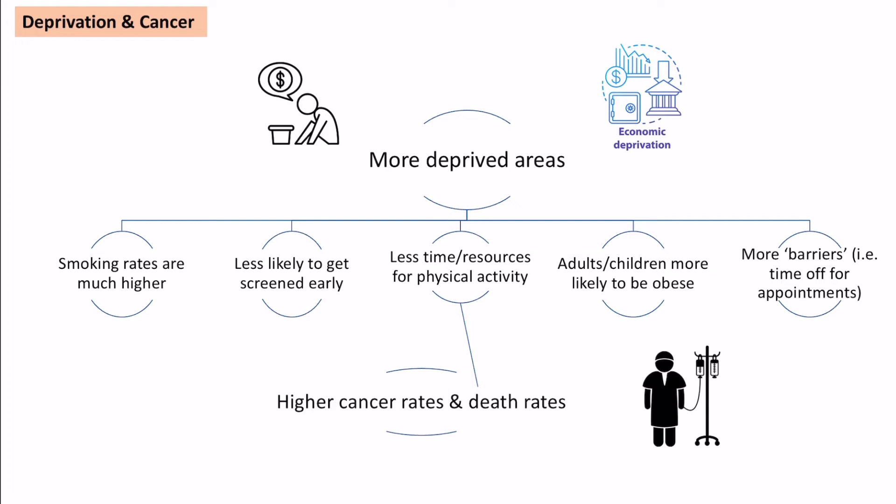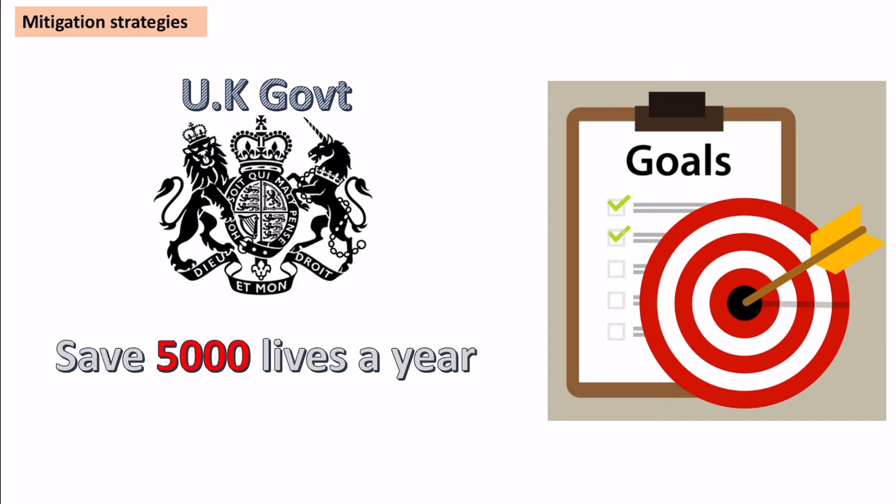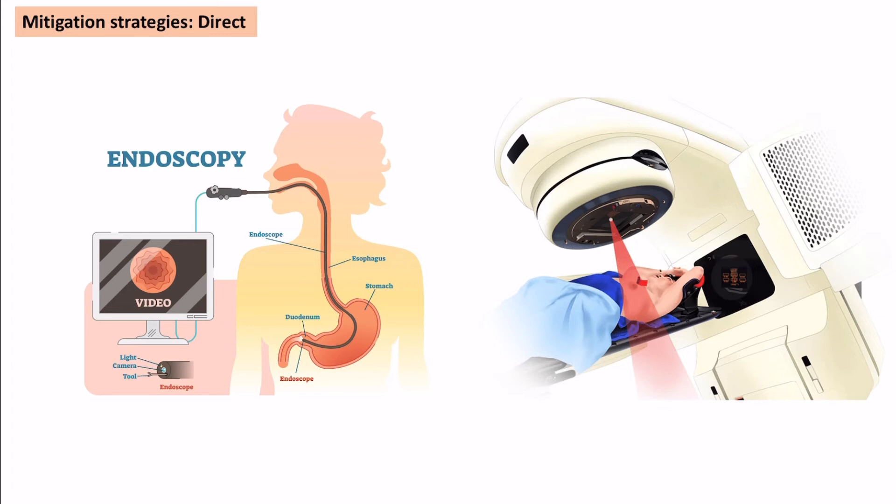So cancer in the UK is increasing, and in deprived areas there are much worse outcomes and higher rates. The government has tried to tackle this on a national level, with a plan to save 5,000 lives a year by mitigating cancer through both direct and indirect strategies.